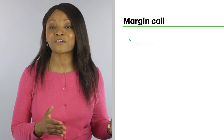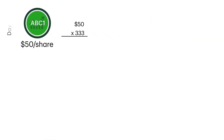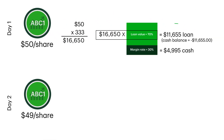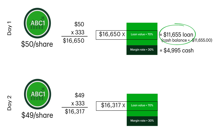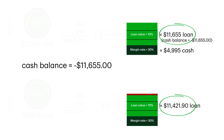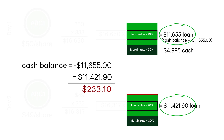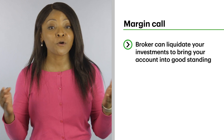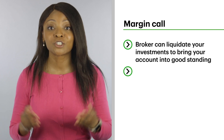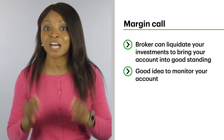If your margin excess also goes negative, you'd be in a margin call, and you would want to fix that right away. For example, the next day ABC1 stock closed down $1 at $49 per share. Your loan value would be 333 shares multiplied by $49 per share, multiplied by the 70% loan value. This results in $11,421.90 in loan value. Remember, your cash balance is negative $11,655, and you're receiving $11,421.90 in loan. This means your margin will be short by $233.10 and you'll be in a margin call. It's important to know that as per the margin account agreement, a broker can liquidate your investment at any time to ensure your account is in good standing. So it's best to monitor and bring your account back into good standing as soon as you're aware of it.